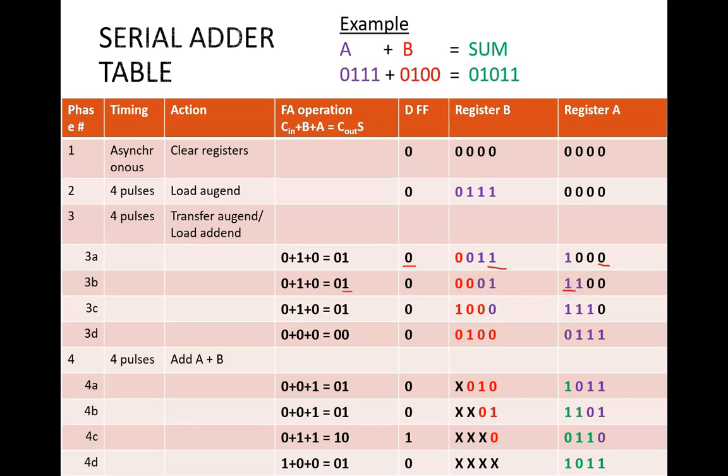The full adder computes the sum bit as one, which feeds into A, as the other bits shift down. It also computes the carryout bit as zero, which becomes the next flip-flop value.